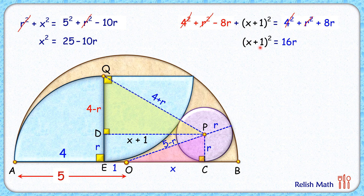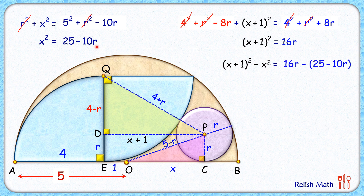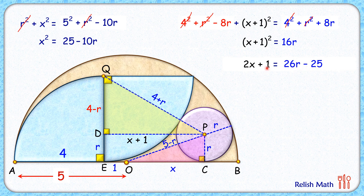To find r, let's subtract the first equation from the second. We get (x plus 1)² minus x² equals 16r minus (25 minus 10r). Expanding the left side, x² cancels and we get 2x plus 1. On the right side, simplifying gives 26r minus 25. Moving the 1 to the right gives 2x equals 26r minus 26, and dividing by 2 gives x equals 13r minus 13.